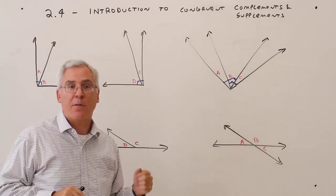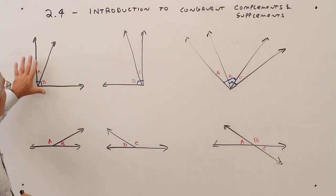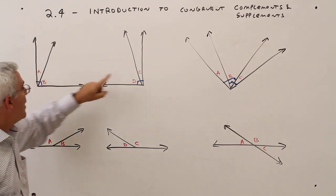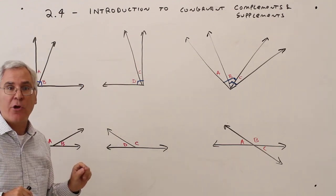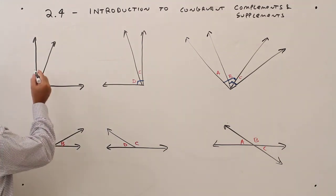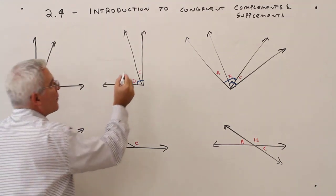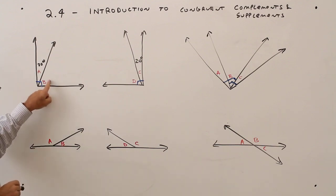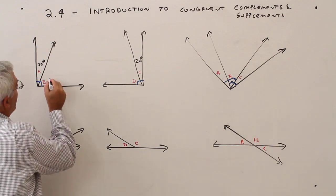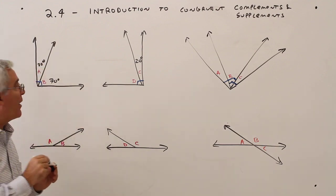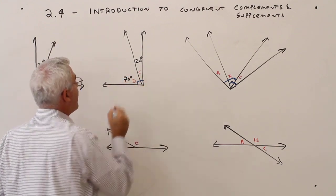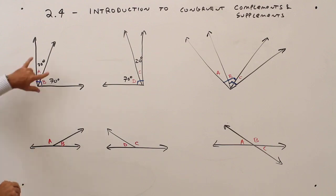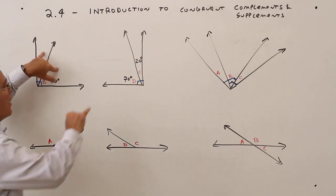Looking at this diagram, I've got two right angles. I've got angle A and B in one right angle, and angle C and D in the other. Let's suppose that A is 20 degrees and C is also 20 degrees. Well, you could conclude that angle B would be 70 degrees — they have to add up to 90 — and angle D would also have to be 70 degrees.